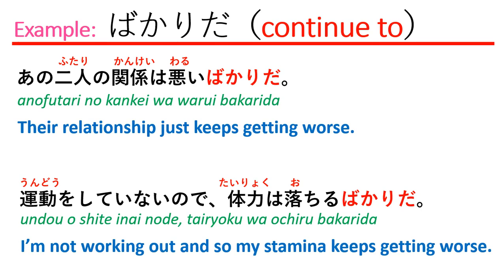For the second sentence, you don't exercise so you have no energy — you lost your strength. That means you lost your power, so it's going in a negative direction. You can use the vocabulary to help explain the situation that goes in a negative direction. Let's see the next example.